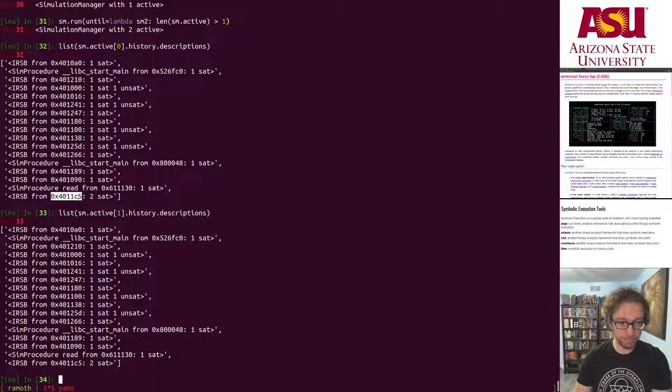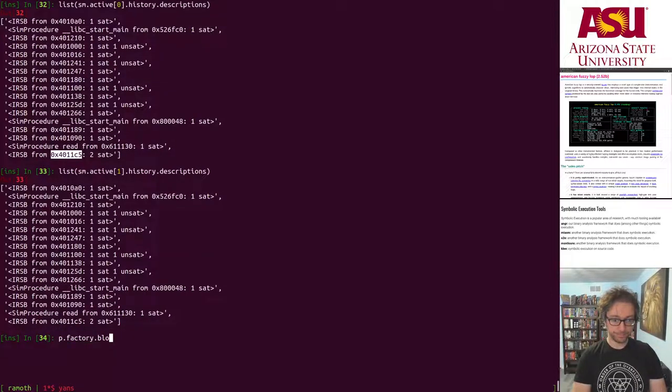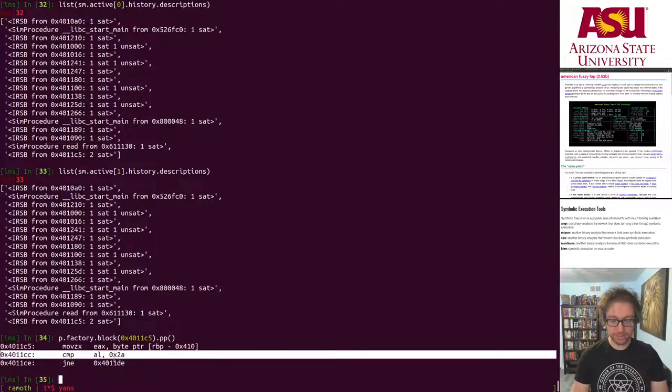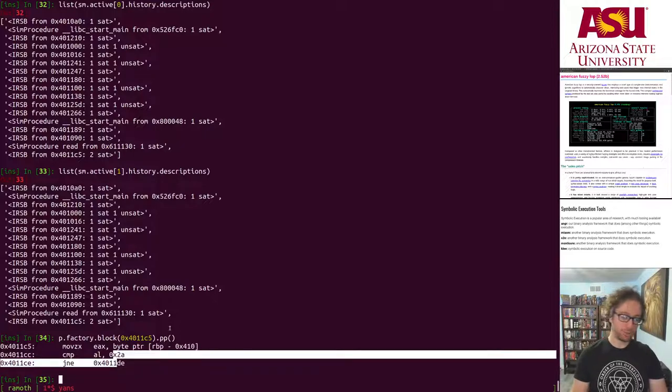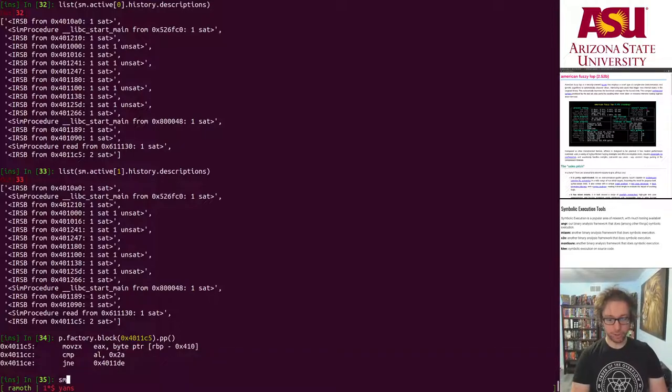It was this block with two satisfiable successors. That's why we now have two states in the emulator. Let's take a look at what this is. And it's our compare and jump.